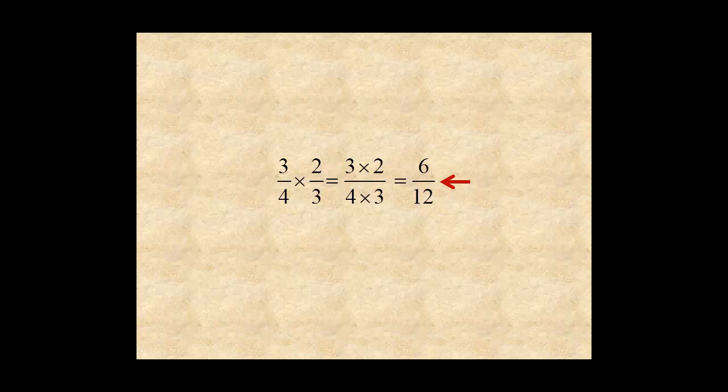Now the numerator and denominator have a common factor of 6, so the product needs to be simplified. Divide the numerator and denominator by 6, and the final answer is 1 half.